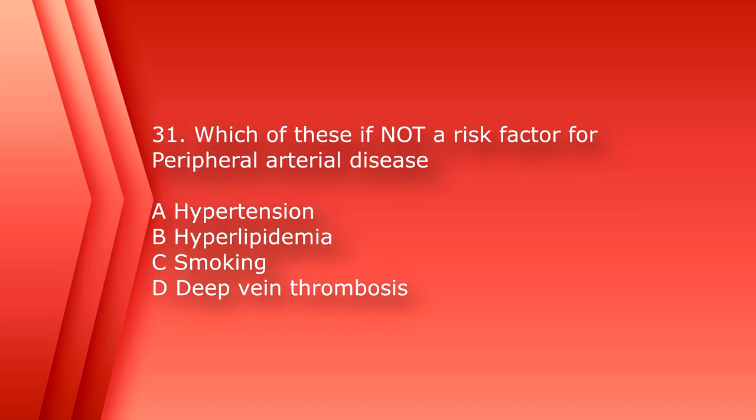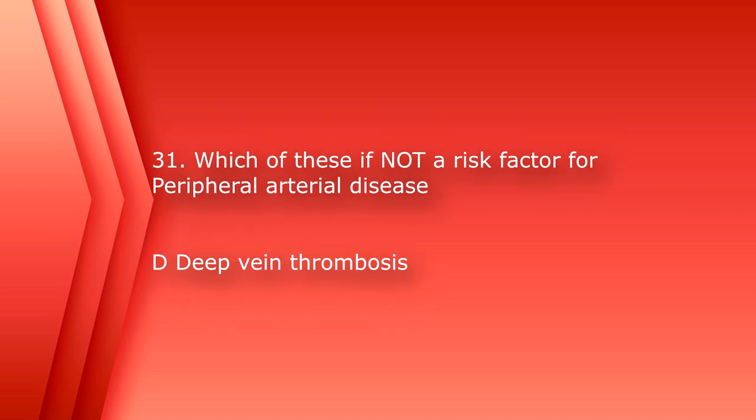Number 31: which of these is not a risk factor for peripheral arterial disease? A. Hypertension, B. Hyperlipidemia, C. Smoking, or D. Deep Vein Thrombosis. The answer is D, Deep Vein Thrombosis.